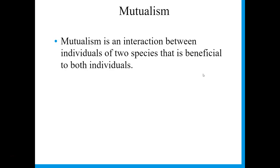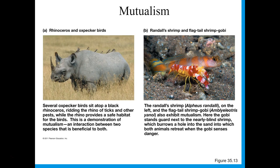Mutualism is when both individuals of two species are benefiting from an interaction. An example of this would be a rhinoceros and an oxpecker bird. The oxpecker birds sit on top of the back of the rhino. The rhino gets rid of ticks because those oxpecker birds are eating them, and the oxpecker birds are getting a safe place to sit — nothing is going to mess with them if they're on top of a rhino.